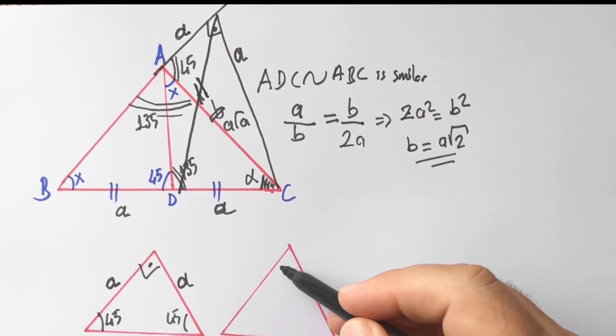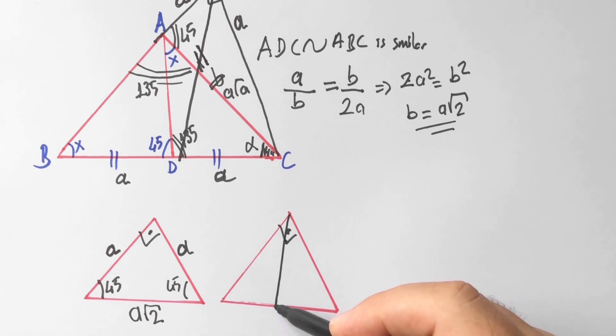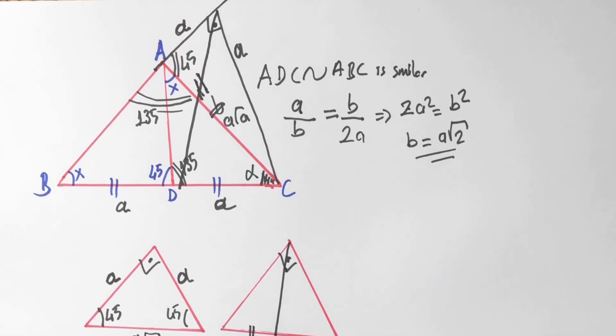We know that this length must be equal. Let's remind you, if the top angle is 90 degrees and the base is divided into two equal parts, this length must be equal to the other parts.